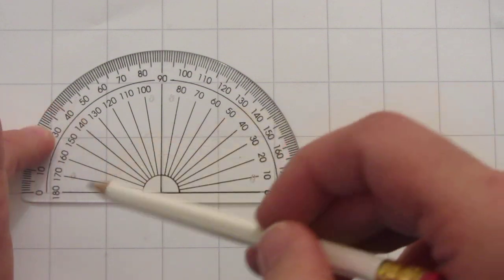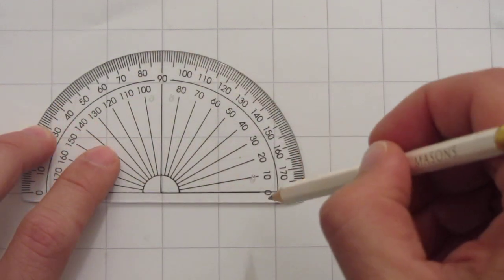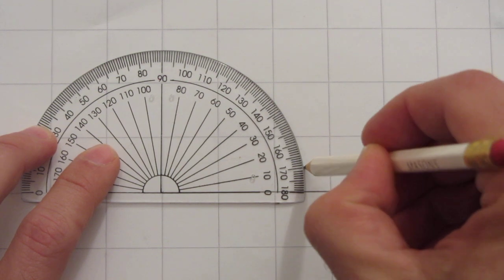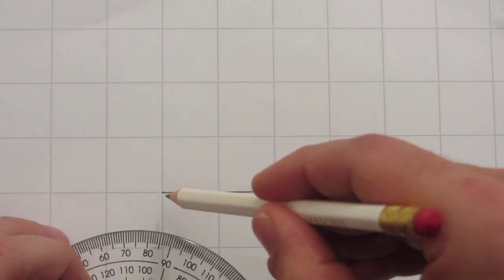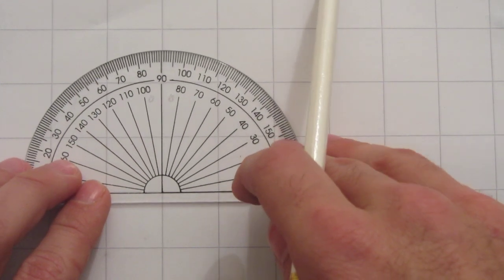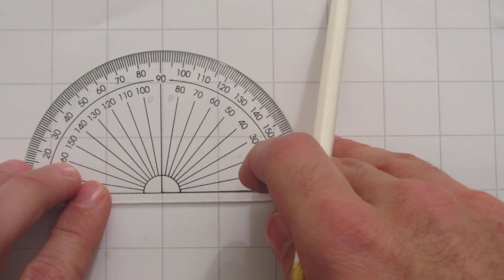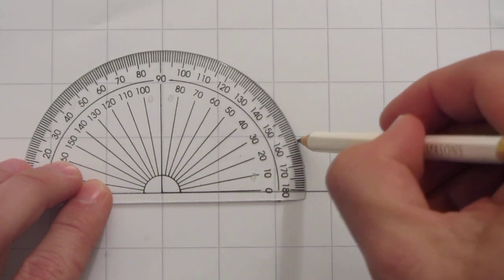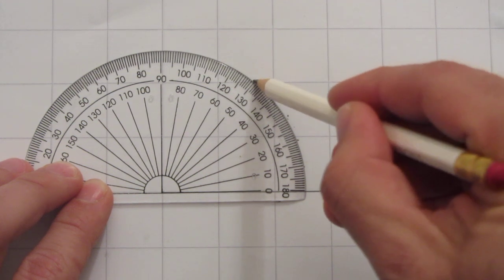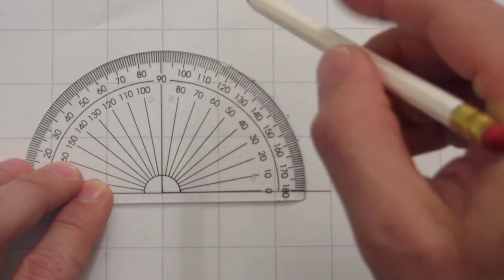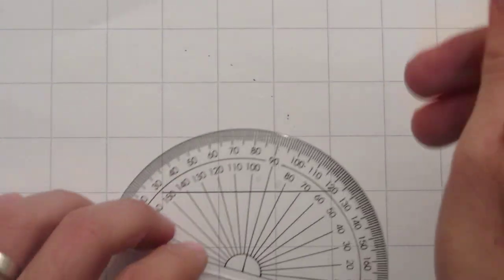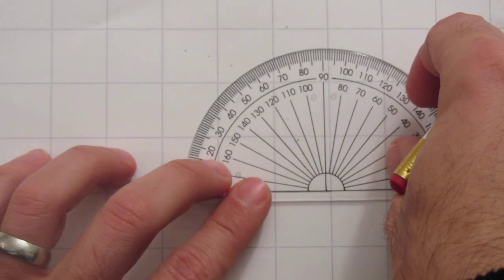Starting at this zero, not this zero, this one. We could have 10 degrees, so I'd put a little dot there, and then I could join the corner there through that line and that would be an angle of 10 degrees. Or I could do 20 by putting a dot there, 30 by putting a dot there, 40, 50, 60, 70, 80, and so on. If I was going to do it from this end, I would put